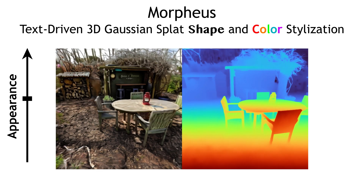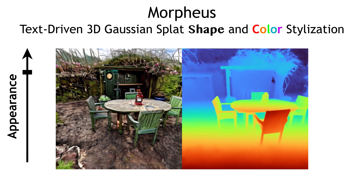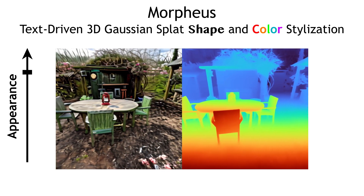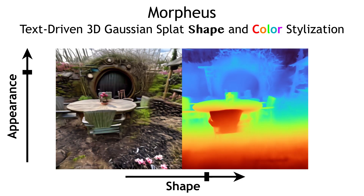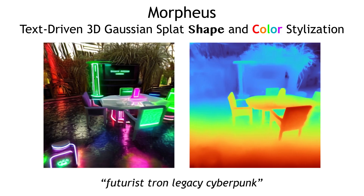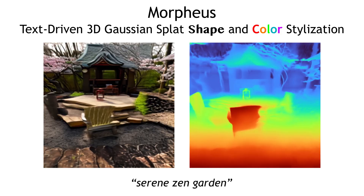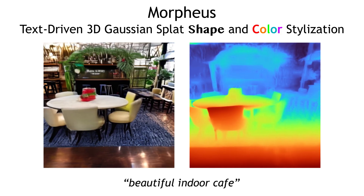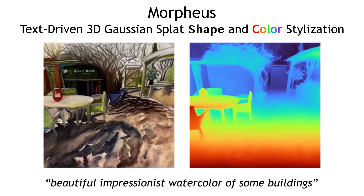As usual, we can vary the strength of color stylization while keeping the shape largely unchanged. We can also ask for stronger shape stylization for the same appearance strength and prompt. Shape changes are important for bringing to life certain prompts, and you can see that as we ask for other edits. We validate this method qualitatively, quantitatively, and via a user study.